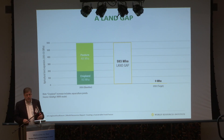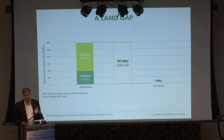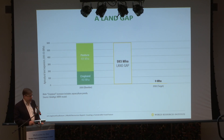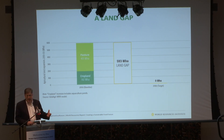Using a new model, we estimated that if we just maintain historical rates of yield growth, including on pasture, we'll still need to convert almost 600 million more hectares of land — about three-quarters the area of the continental United States. That would have enormous consequences for biodiversity, as that land would have to come from forests and savannas. About 400 million hectares of that is pasture.